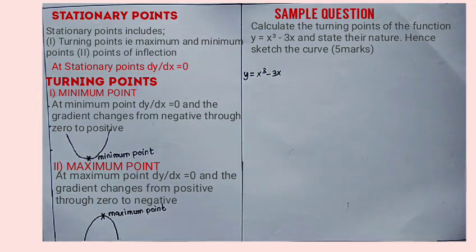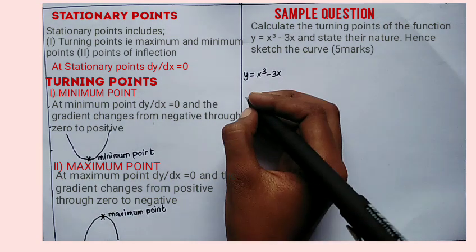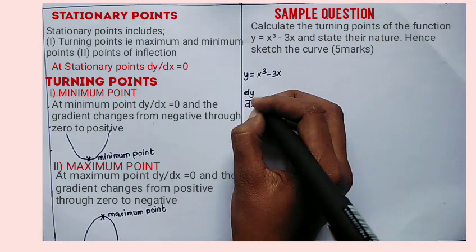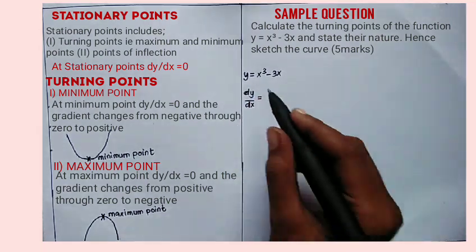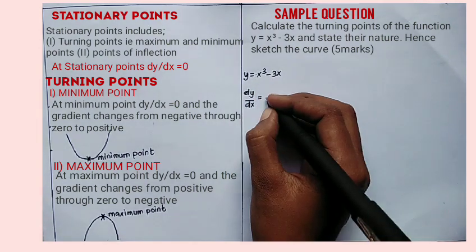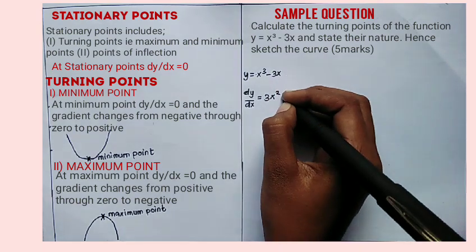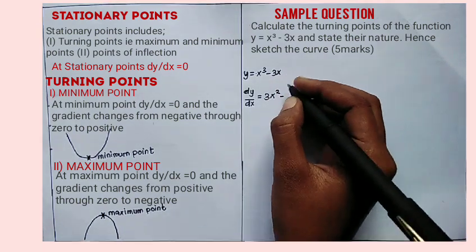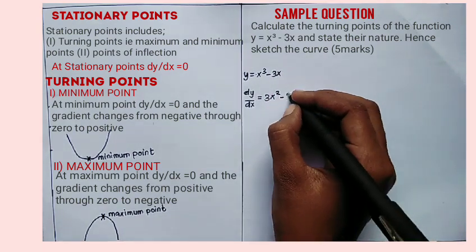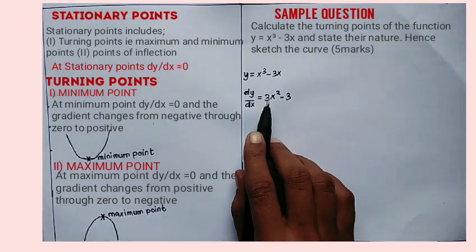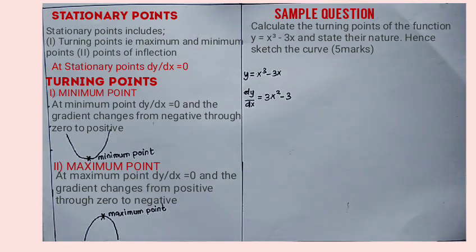We are going to differentiate the curve — that is, differentiate y with respect to x. dy over dx is equal to: you multiply 1 by 3, that is 3x, and you subtract 1 from the power. That is 3x squared. Then minus 1 times 3, that is 3, and x has a power of 1 subtract 1, which is a power of 0. So it is 3x squared minus 3. That is your gradient function.